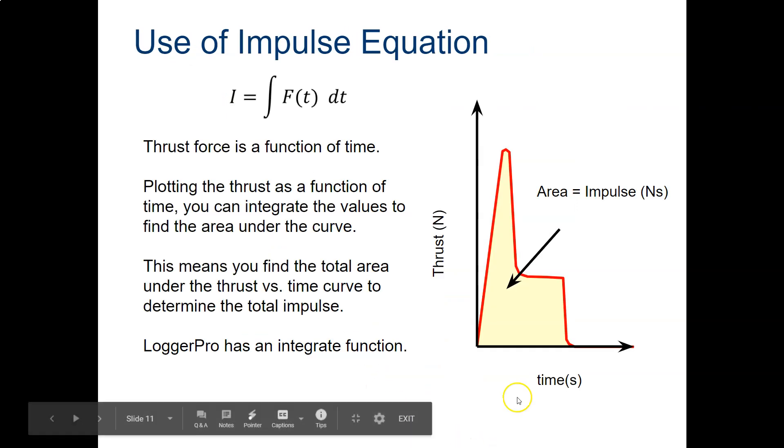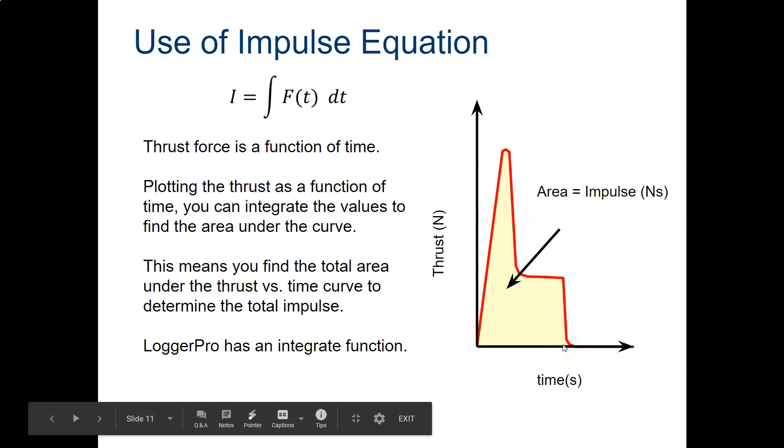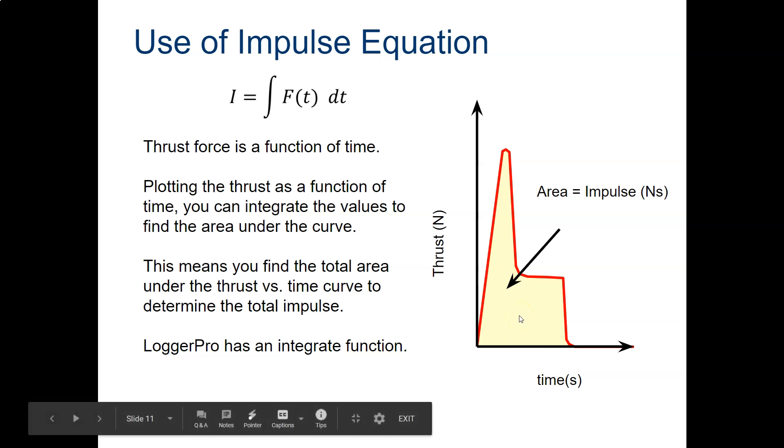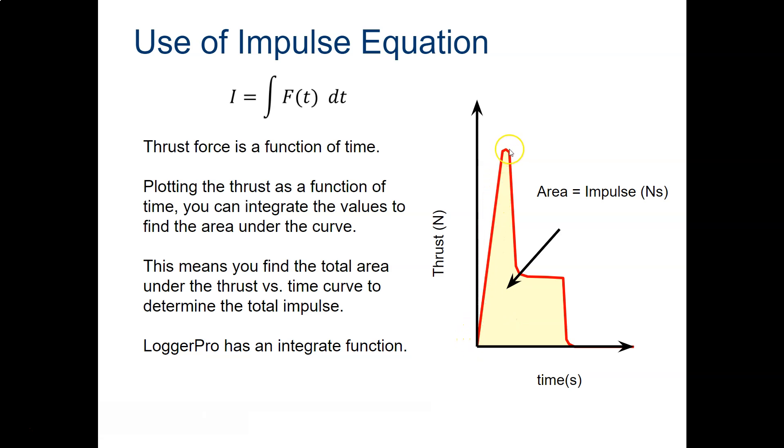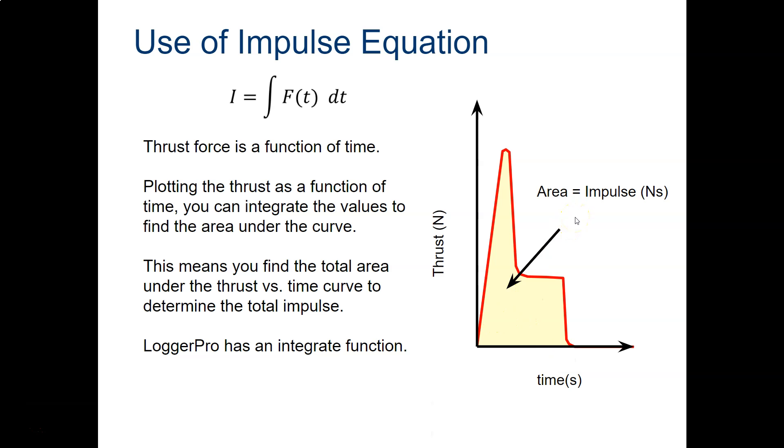Let's take a look at what a typical thrust curve looks like for a model rocket like an Estes rocket. The total impulse is the area under the curve. So this red line is basically a map, it's a graph of the thrust of that engine mapped over time. The area under that curve is the total impulse—that's something you need to know. We're going to work with some thrust curves, so you'll need to know that. You're not going to have to do any integration, Logger Pro will do it for you.